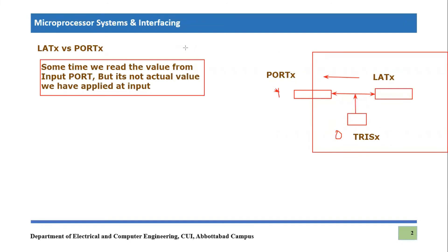What you have to do is clear the zero and make it one. What happens now: the direction becomes correct. I have made TRIS equal to one, which means this pin will be considered as an input pin, and then the actual value at the pin will be read — not from the latch. Now we will receive the actual value. This is what happens sometimes when we have not configured the TRIS register properly: we end up using inside latch values rather than the actual pin values, unless it is configured correctly.